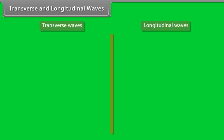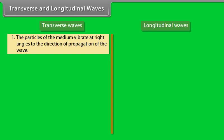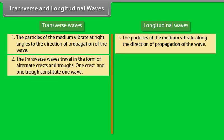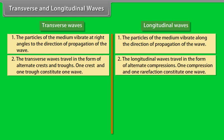Let's compare transverse waves and longitudinal waves. Number 1: In transverse waves, the particles of the medium vibrate at right angles to the direction of propagation of the wave, whereas in longitudinal waves, the particles vibrate along the direction of propagation. Number 2: Transverse waves travel in the form of alternate crests and troughs — one crest and one trough constitute one wave — whereas longitudinal waves travel in the form of alternate compressions and rarefactions; one compression and one rarefaction constitute one wave.